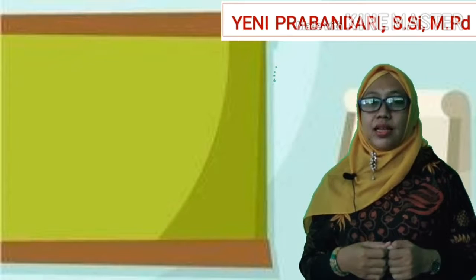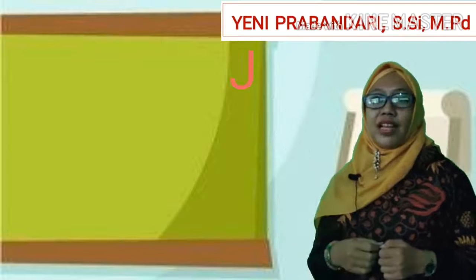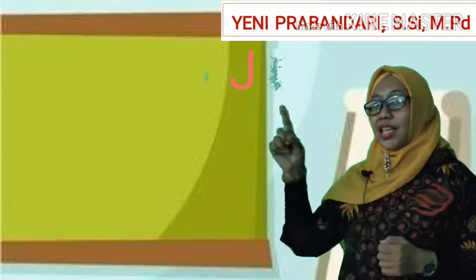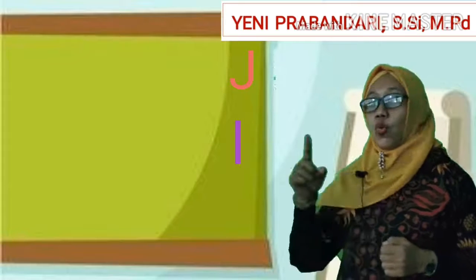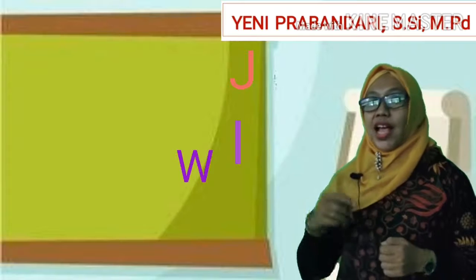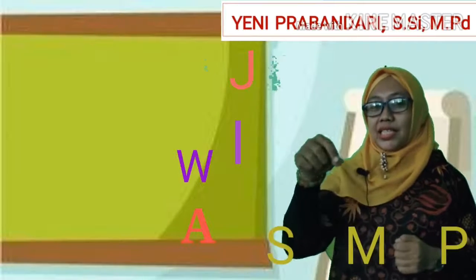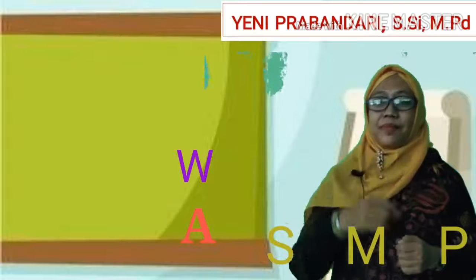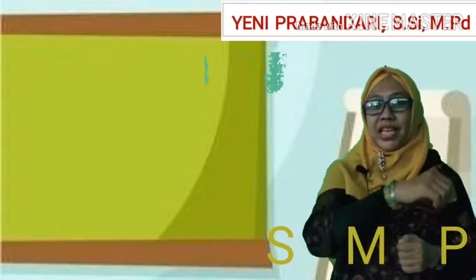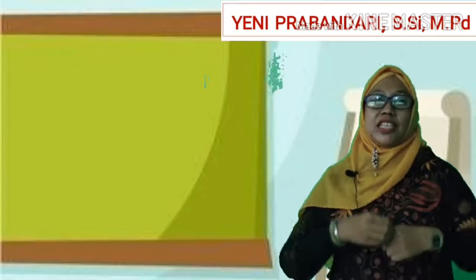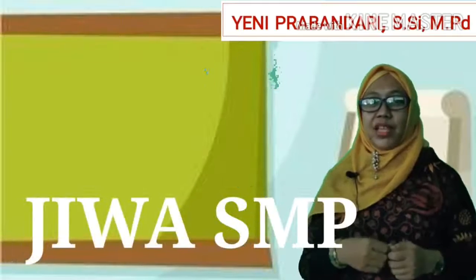Kita ingat ada kata yang mudah untuk mengingat tentang besaran pokok. Yaitu ada J, lalu ada I, lalu ada W, lalu ada A, lalu ada S, M, P. Jadi 'JIWASP' — J, I, W, A, S, M, P.